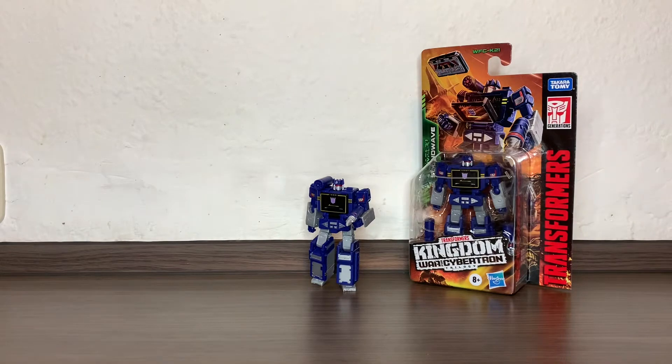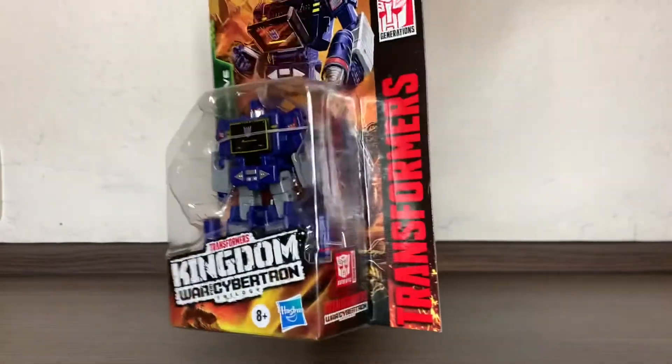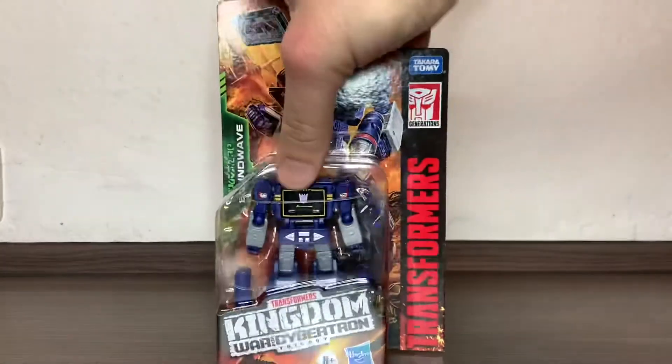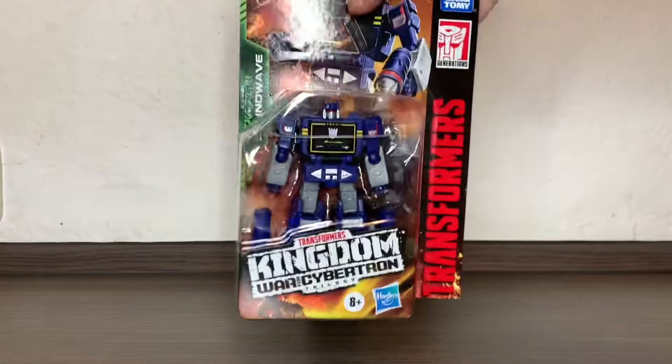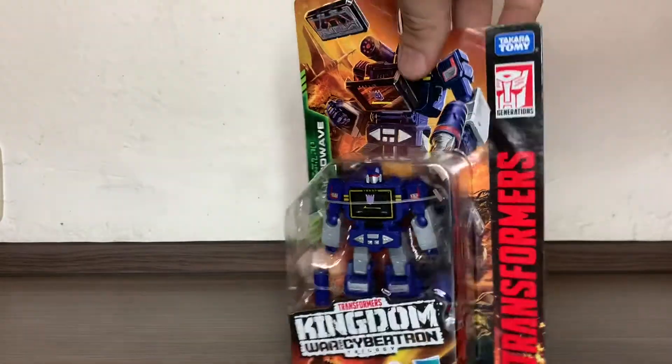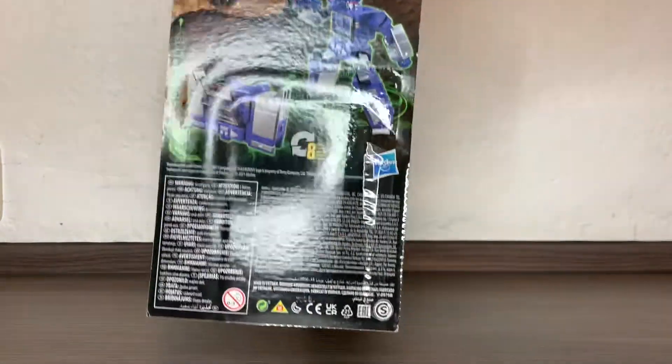That's the figure in the card. Of all the core class figures, I think he's the one with the most accessories. He has the little cassette tape inside, he comes with his shoulder cannon and his handgun, and you can see some photos of him.